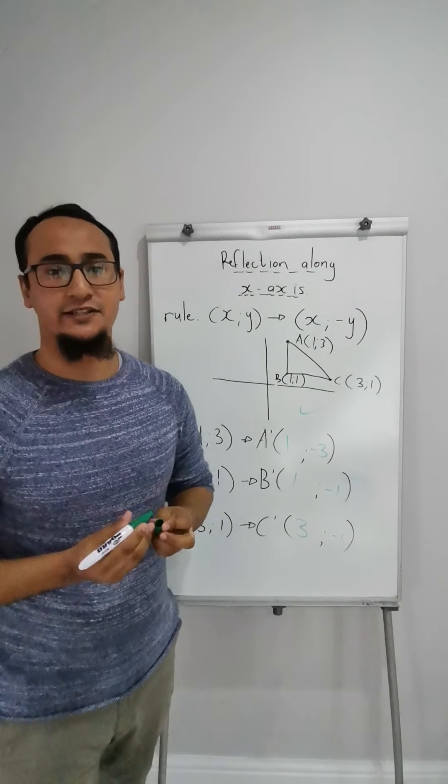Let's begin. The rule is x and y, what sign changes? The y-value changes its sign or operation. So if it is 1 and 3 over here, it will now become 1 and negative 3. If it is 1 and 1 over here, it will now become 1 and negative 1. If it is 3 and 1 over there, it will be 3 and negative 1.